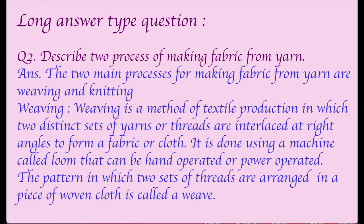Question two: Describe two processes of making fabric from yarns. The two main processes are weaving and knitting. Weaving is a method of textile production in which two distinct sets of yarns or threads are interlaced at right angles to form a fabric or cloth. It is done using a machine called a loom, which can be hand-operated or power-operated. The pattern formed is called a weave.